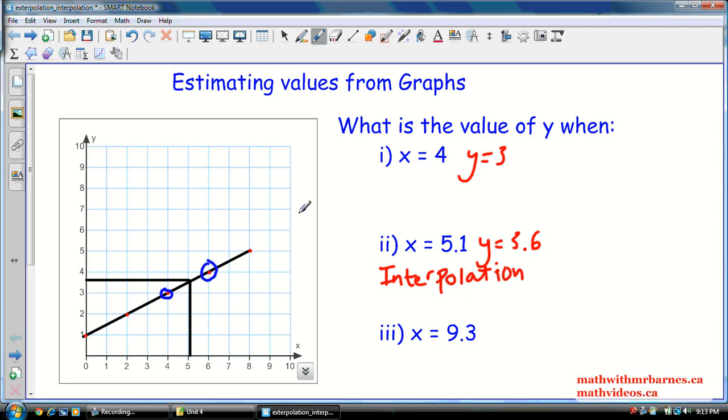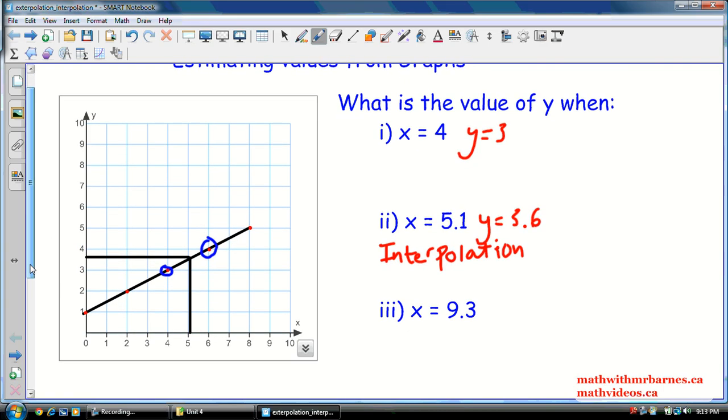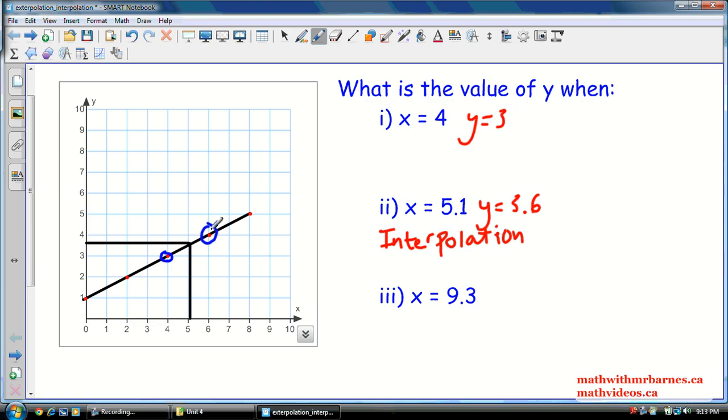Now, so it asks us for another thing. 9.3. X is equal to 9.3. So, what's the value of y? When we look at that, our graph doesn't even go that far. So, one of the things we have to assume for, in this case, is that our pattern continues as normal. And if it does, then you know what? There's no problem in extending our graph a little bit. So, it might look something like that.